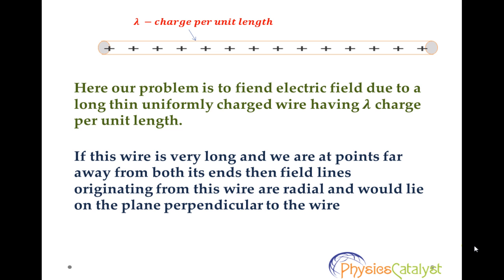Now if this wire is very long and we are at points far away from both the ends, then by symmetry the field lines outside the wire are radial and lie in planes perpendicular to the wire. Also the field has same magnitude at all points at same radial distance from the wire.